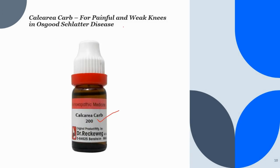With Calcarea Carbonica, the knee pain may be stitching, drawing, stinging, or tearing in nature. Pain from the knee may extend down to the toe in some cases. The knee may also feel lame, and in some cases there is a sensation of dislocation of the knee from intense pain. A crackling sound from the knee may appear on walking, and the knee is also swollen and hot in many cases.